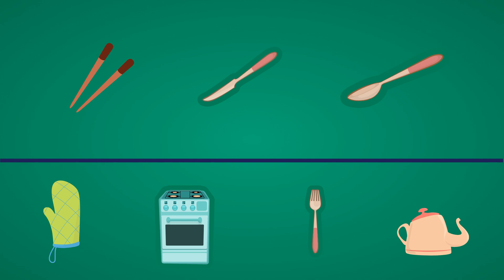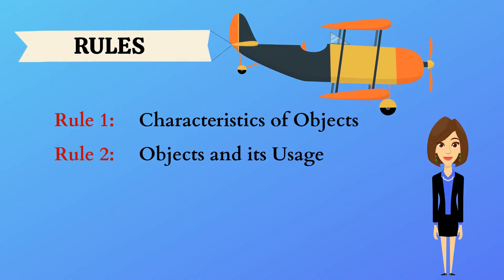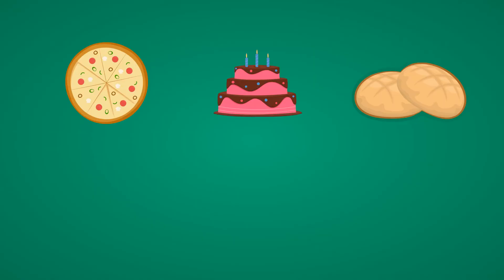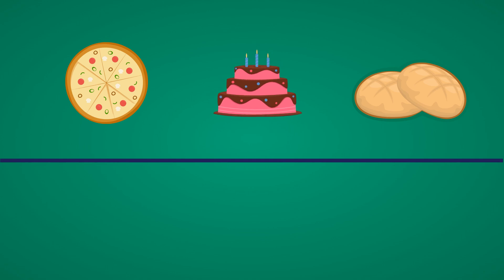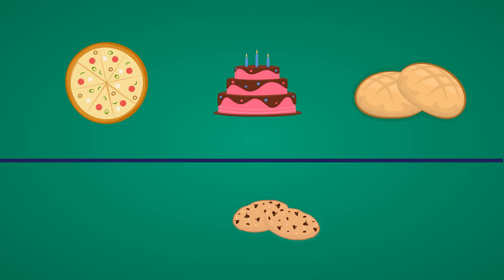Rule three: food types. In the top row we have a pizza, a cake, and a bread. In the answer choices we have an ice cream, a cup of coffee, a cookie, and a soft drink. All these items are food items, but we need to identify the item that goes best with the top row. All three foods in the top row are baked items, and in the answer choices the only baked food is a cookie — hence cookie is the answer.